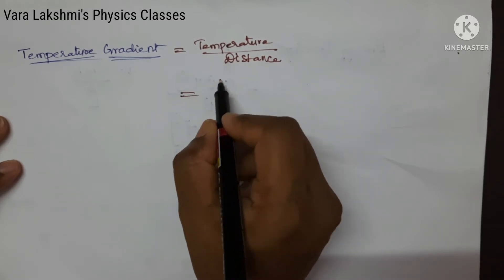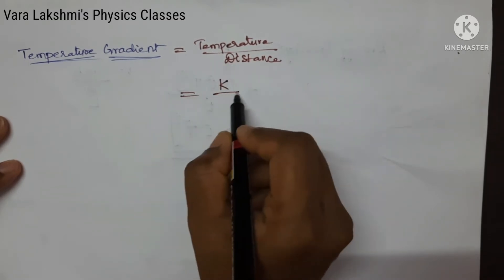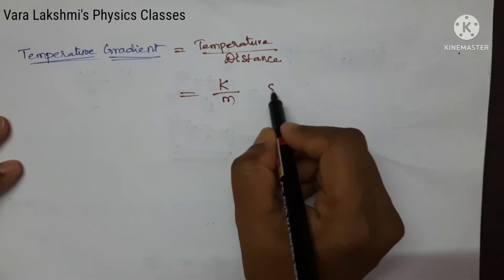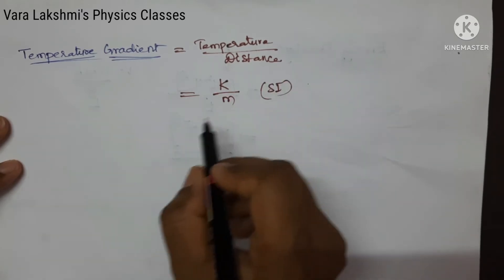Temperature SI unit is Kelvin and the distance is meter. This is the SI unit of temperature gradient.